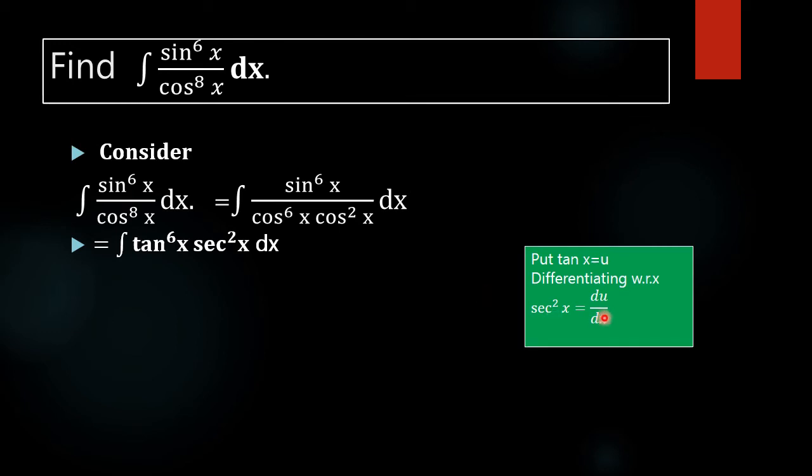Now substituting these values here we will get tan x equal to u. Then tan raised to 6x is u raised to 6. Then sec square x into dx equal to du. That is integral of u raised to 6 du. The value of integral of u raised to 6 is u raised to 7 by 7 plus C.